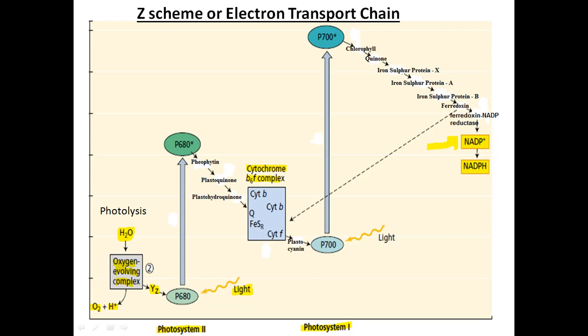When light is received by the reaction center of chlorophyll in photosystem 2 and photosystem 1, the electrons become excited and are ejected. These ejected electrons do not return to their place of origin. The space left by the ejection of electrons in photosystem 2 is filled by electrons coming from the water molecule.